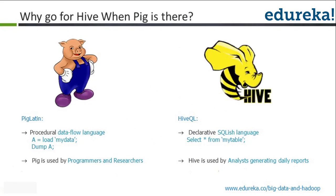Why go for Hive when PIG is there? PIG is definitely a high-level scripting language used for data flows — it is used for programmers and researchers for quick prototyping. Hive is very much used by analysts who have less programming know-how but more business know-how. If you know SQL, you can use Hive, and it is very much similar to SQL.